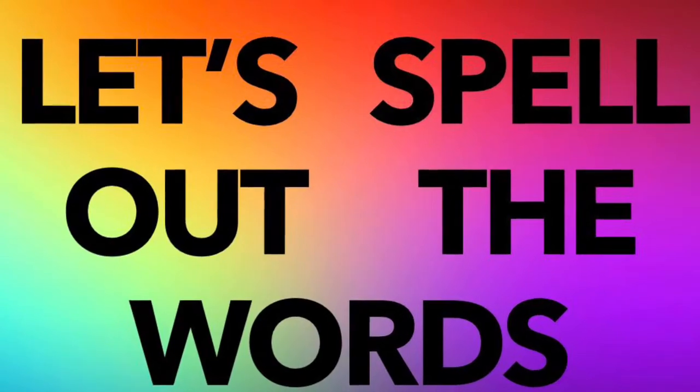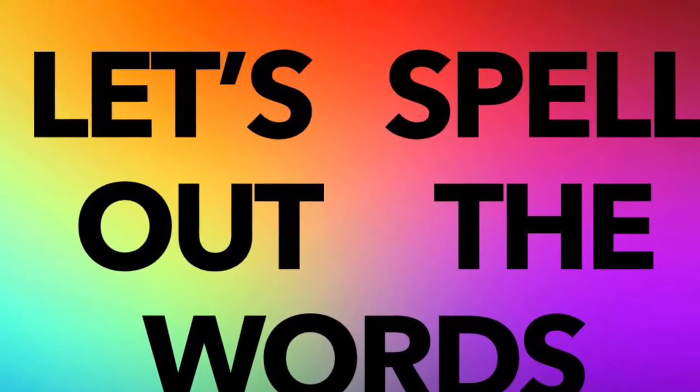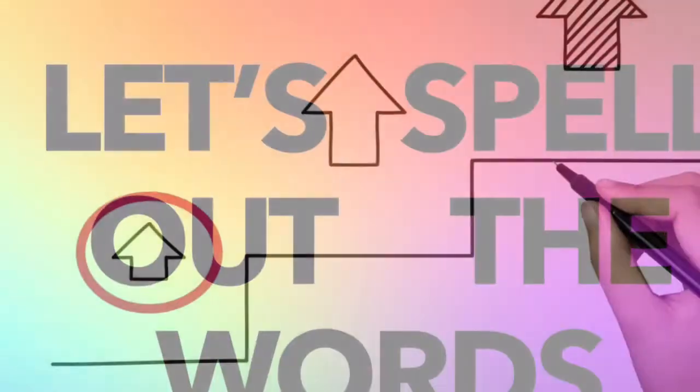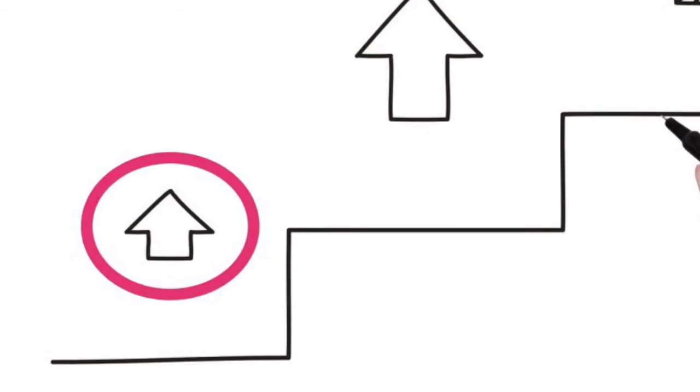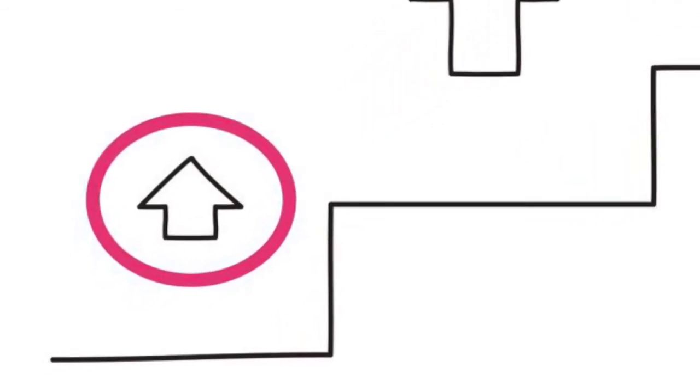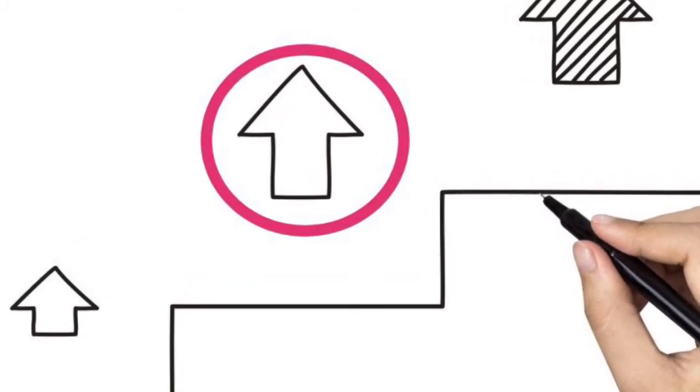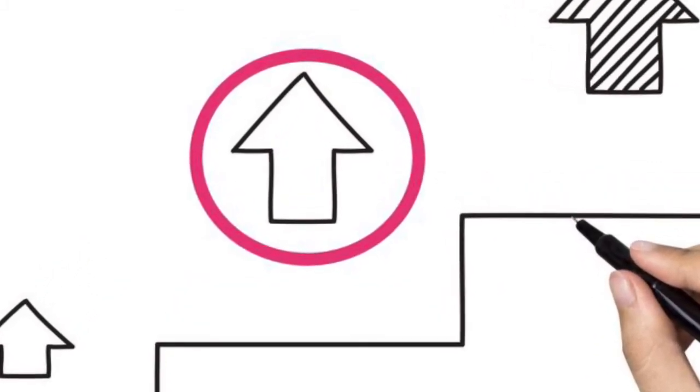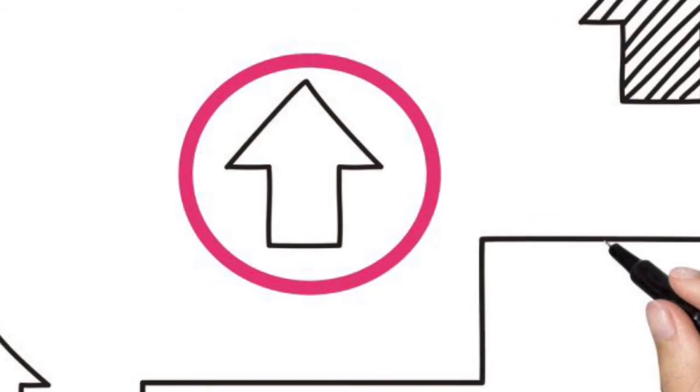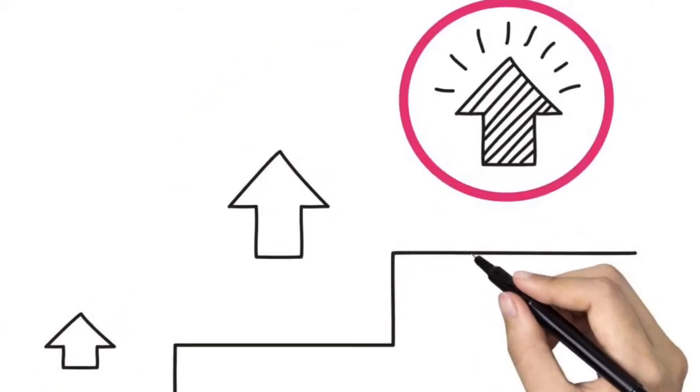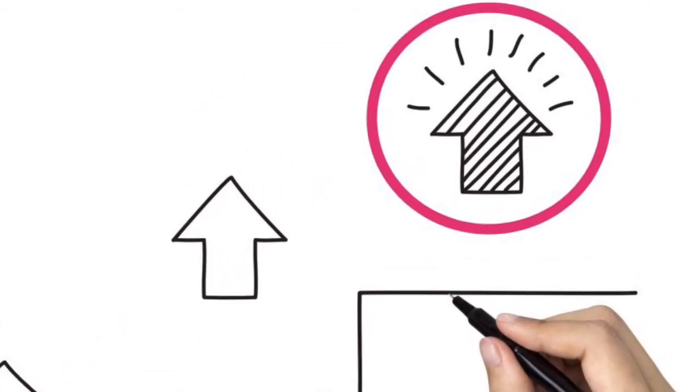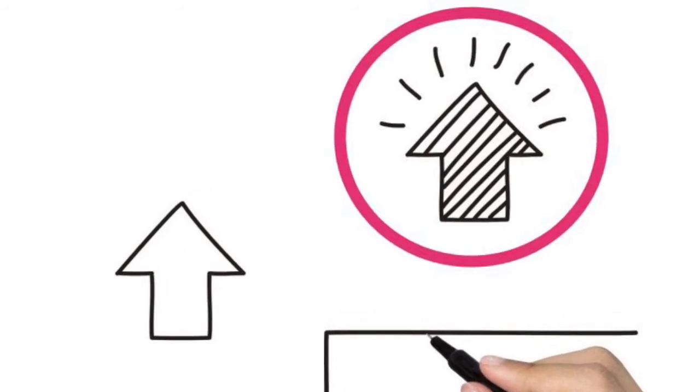Let's spell out the words. Good: G, double O, D. Better: B, E, double T, E, R. Best: B, E, S, T.